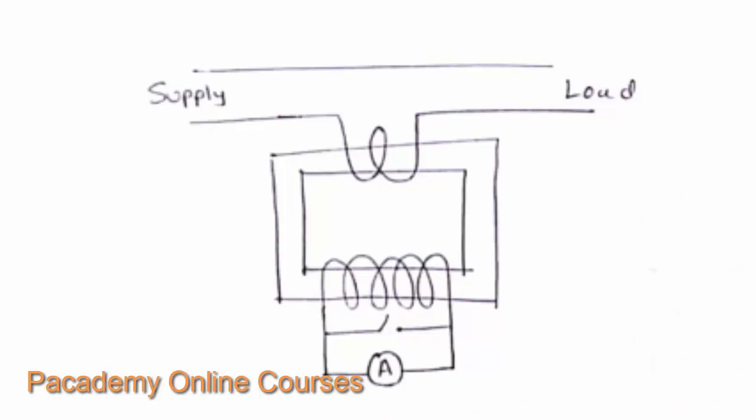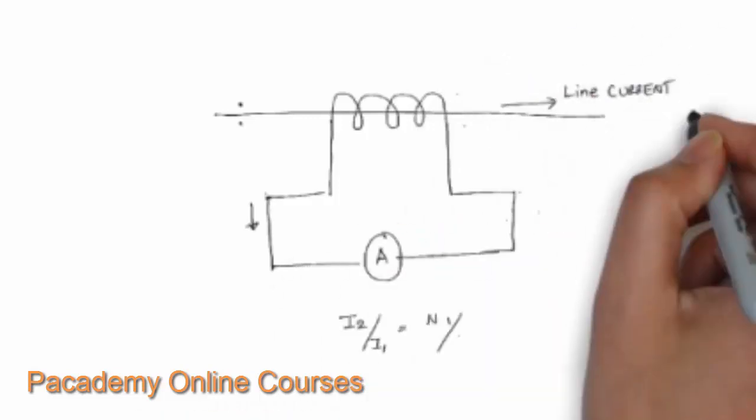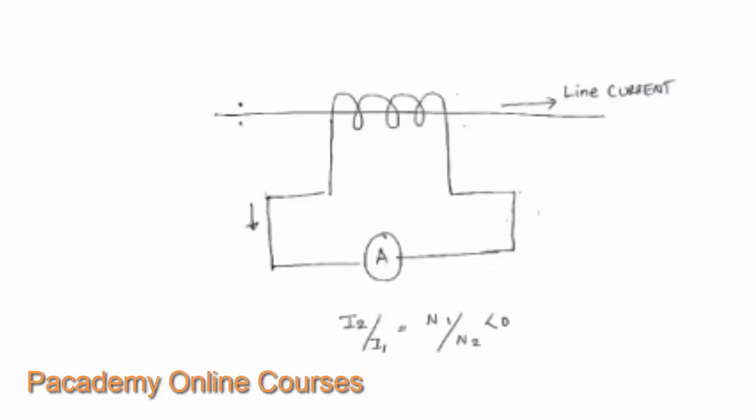Looking at the diagram of a current transformer, it is connected in series with the supply line on which the current is to be measured. The primary has a few thick turns and the secondary has many turns. The current is stepped down in the secondary and can be easily measured by the ammeter, which is calibrated to output the current considering the transformation ratio. In the simplified diagram, I2 by I1 equals N1 by N2, which is less than 1.